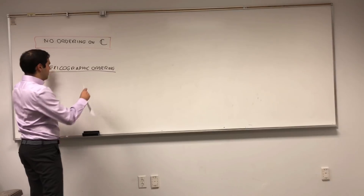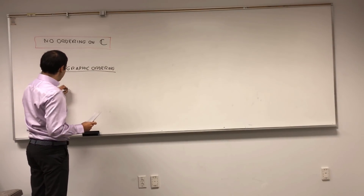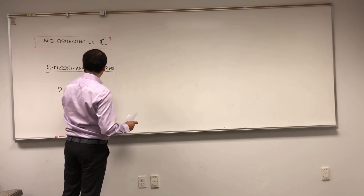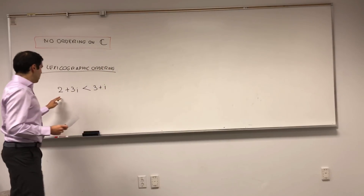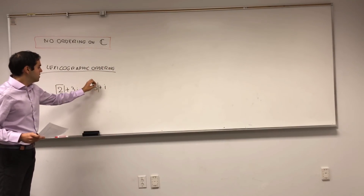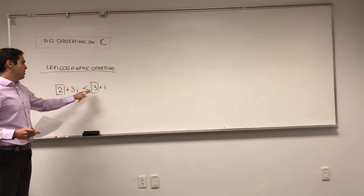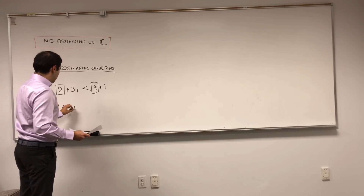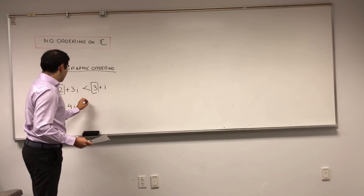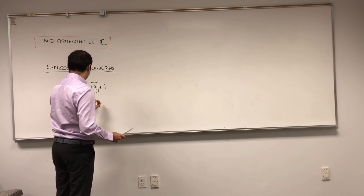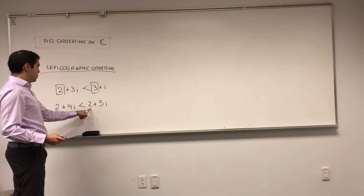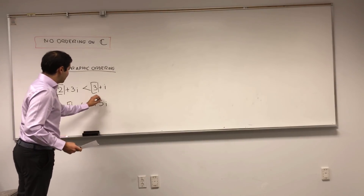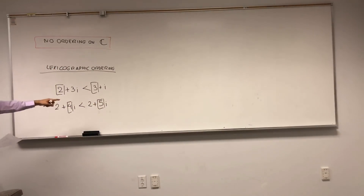By saying that, let me just give you an example. Let's say 2 plus 3i is less than or equal to 3 plus i, because the real part here is less than the real part here. And if it has the same real part, then you look at the imaginary part. So if your real parts are both 2, and because 4 is less than 5, you actually have that relation.